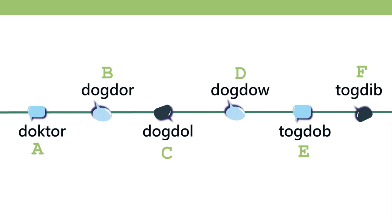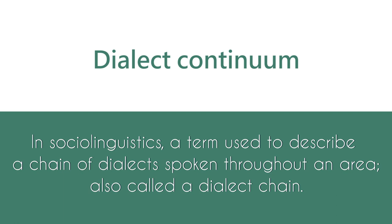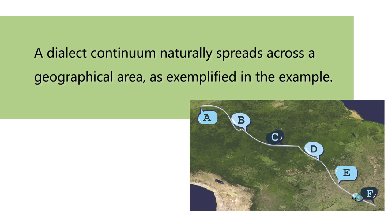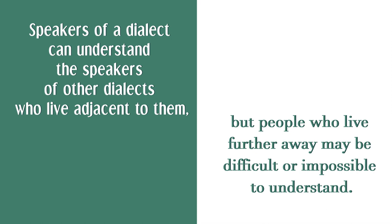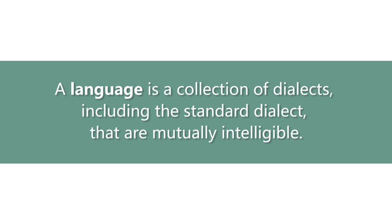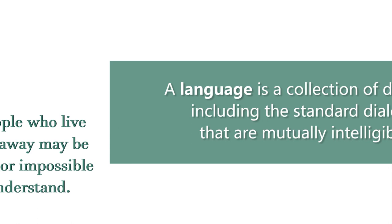In linguistics and sociolinguistics, a dialect continuum — also called a dialect chain — describes a chain of dialects spoken throughout an area where speakers of any dialect can understand speakers of adjacent dialects, but speakers further away may be difficult or impossible to understand. This actually challenges our own definition, since I said a language is a set of mutually intelligible dialects, yet dialects of the same language are sometimes difficult or impossible to understand.